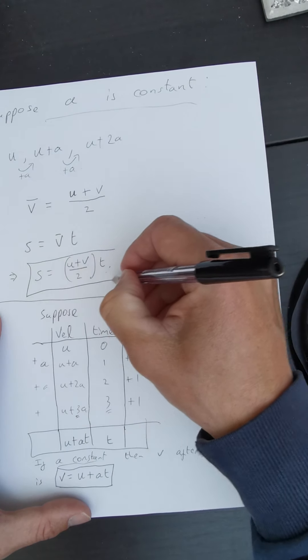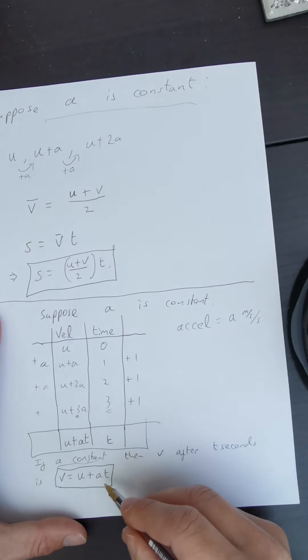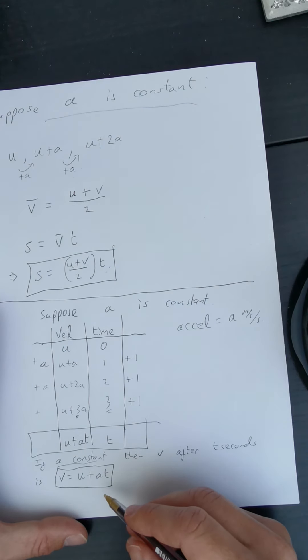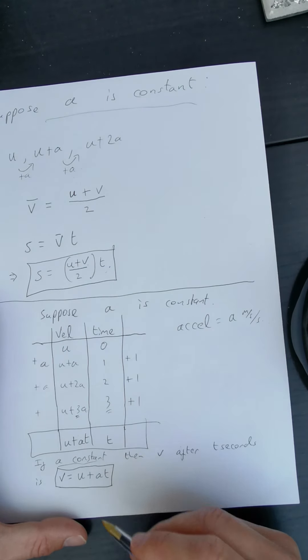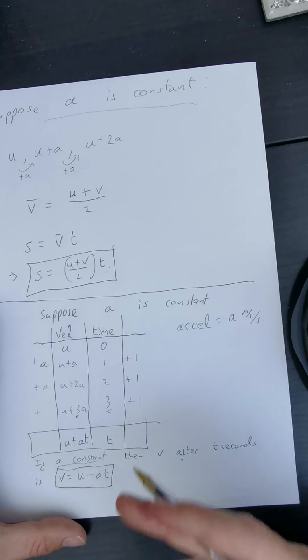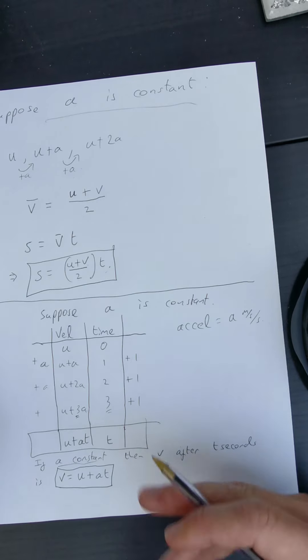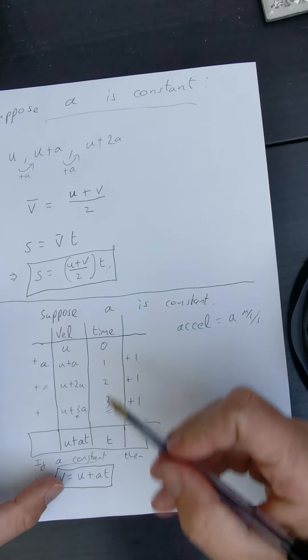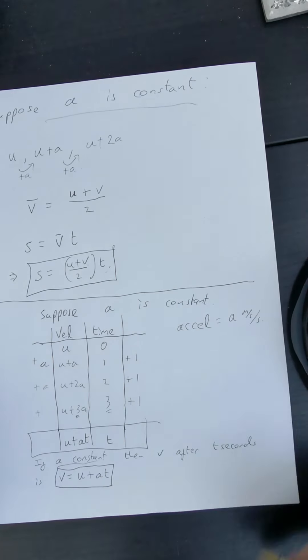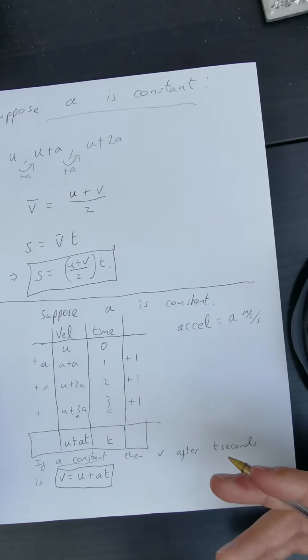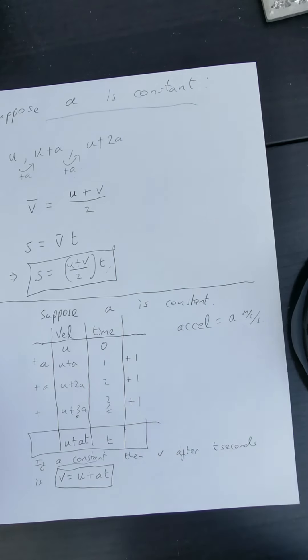So the second master equation is v = u + at. Here's the first master equation and here's the second. Make sure you understand them — not just remember the equations, but understand where they come from. Try to explain them to somebody else.